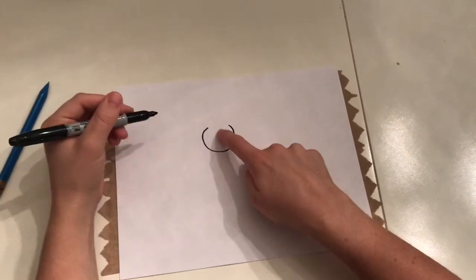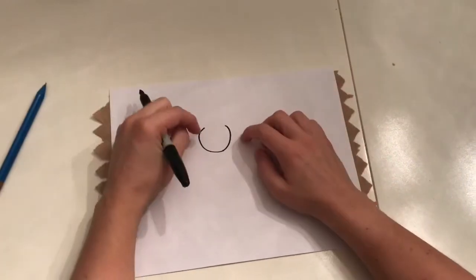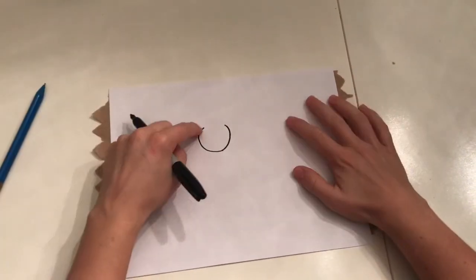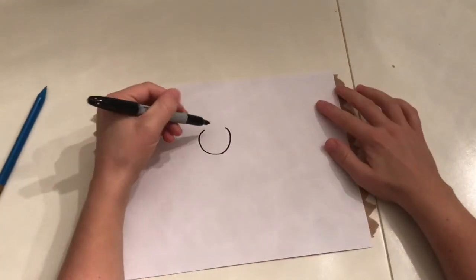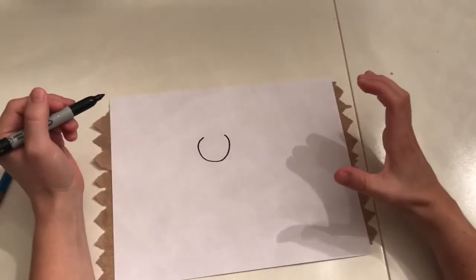And notice I just kind of left the head. This is going to be the head of our cat. And I didn't connect it there. It's almost like a U shape, but a little more curved. So you draw your almost circle.